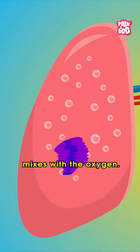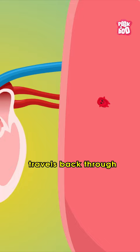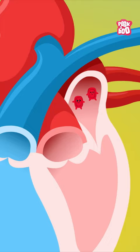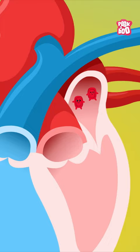Then the oxygenated blood travels back through the pulmonary vein into the left atrium and finally through the mitral valve into the fourth chamber called the left ventricle and then pumped out to the rest of your body.